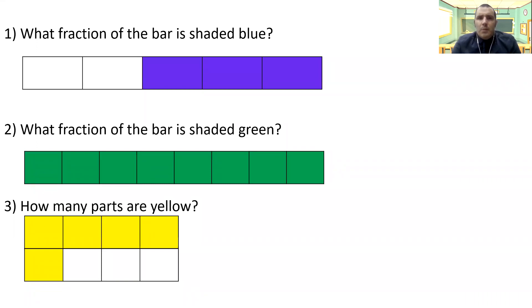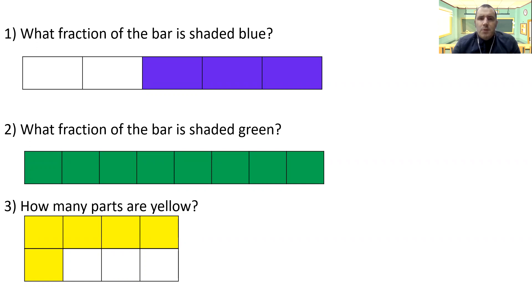How did we get on with those? Question one: what fraction of the bar is shaded blue? We need to work out what our numerator is and what our denominator is. The denominator is the number of parts that something's been divided up into, so we've got five parts here. There are three parts that are shaded blue — that will be our numerator. So three fifths is our answer.